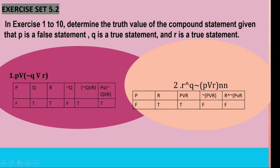Exercise set 5.2. In exercises 1 to 10, determine the truth value of the compound statement given that P is a false statement, Q is a true statement, and R is a true statement.